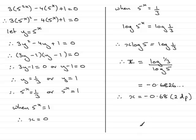Alright, so that's how you would solve an equation of this type. Recognize that you can write this term as 5 to the power x all squared, and you've got yourself a quadratic equation in 5 to the power x.